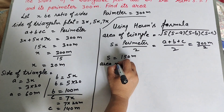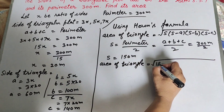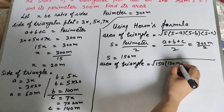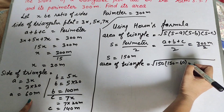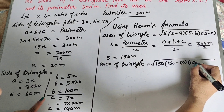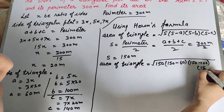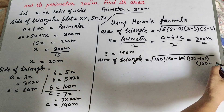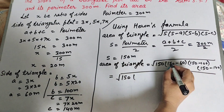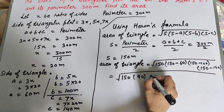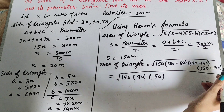Substituting into Heron's formula: Area = √(150 × (150−60) × (150−100) × (150−140)) = √(150 × 90 × 50 × 10).